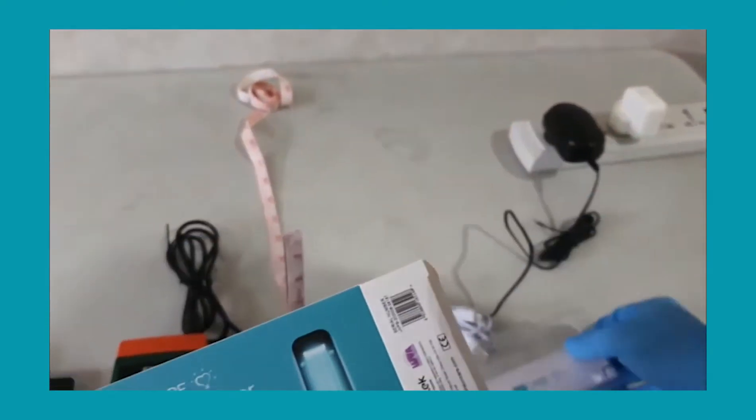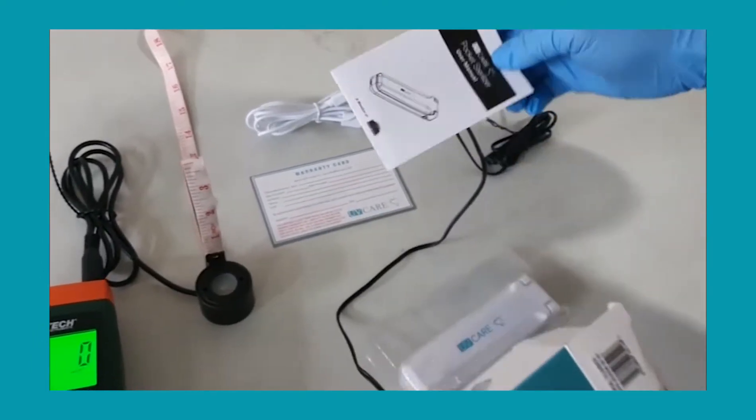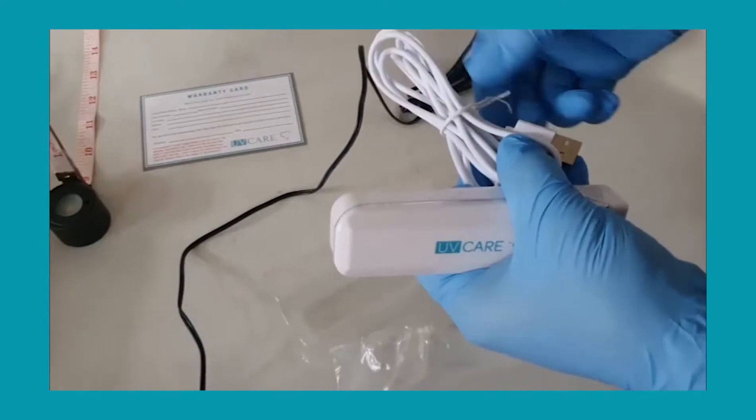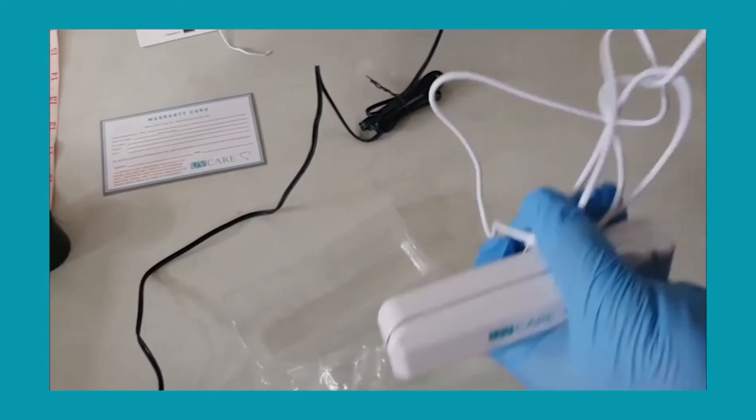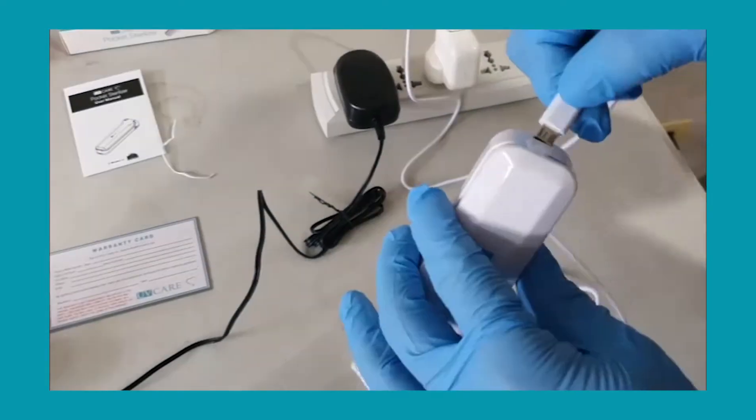The UV Care pocket sterilizer comes with a power adapter which you can plug into a power bank or directly to the power adapter, a manual, a warranty card, and the pocket sterilizer.